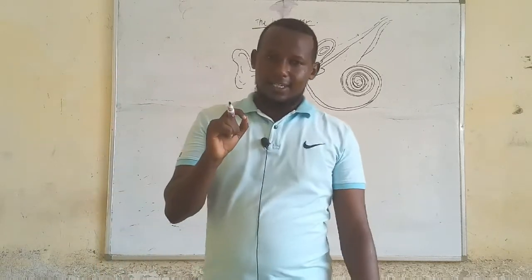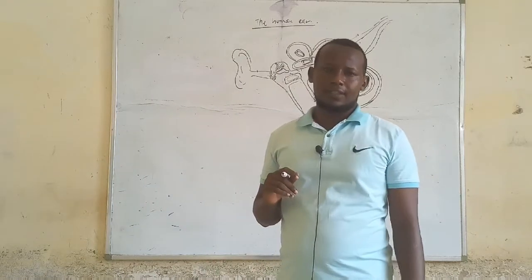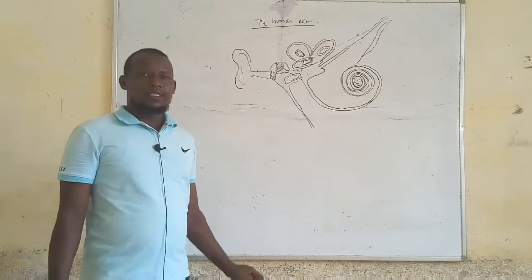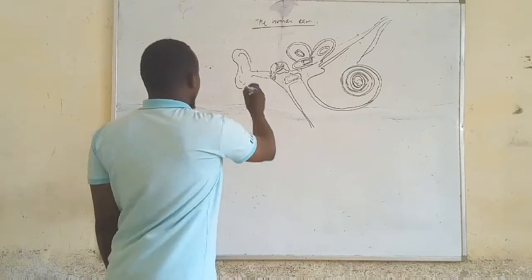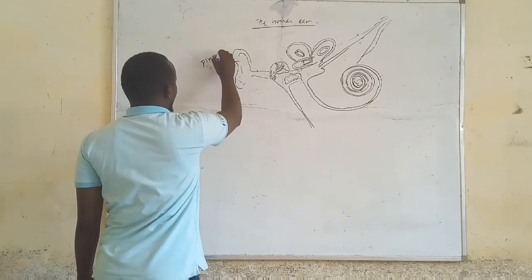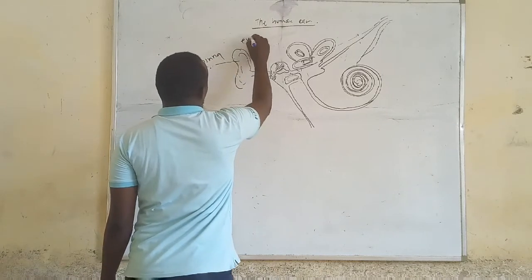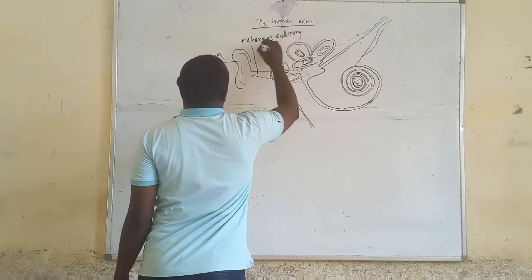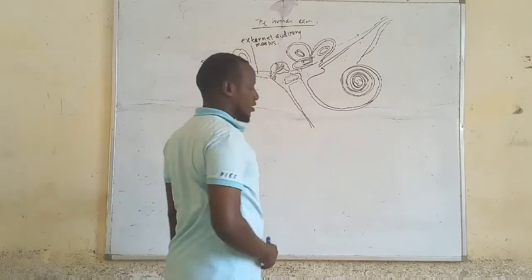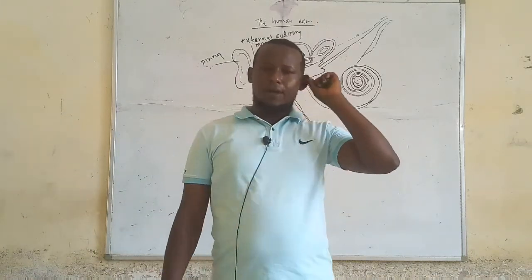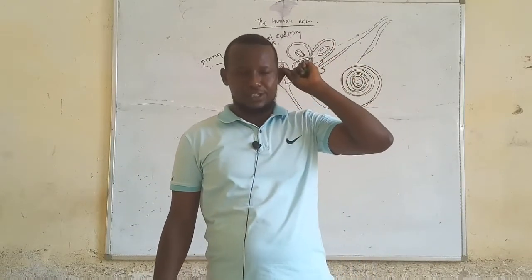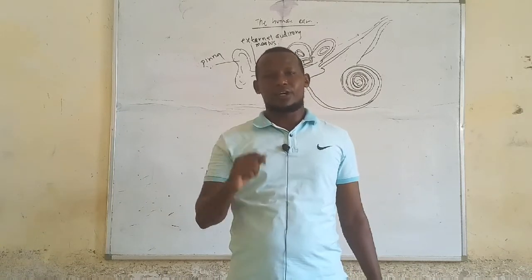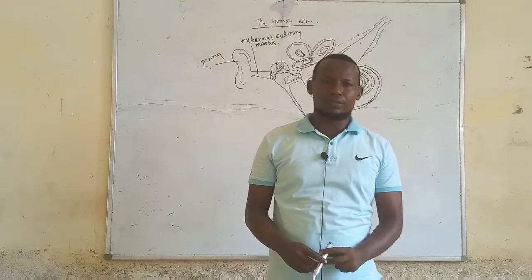The ear is divided into three regions: the outer region, the middle region, and the inner region. The outer ear is made up of the pinna — this is the pinna — and the external auditory meatus. The pinna is a flap of skin made of cartilage, and its main role is to collect and concentrate the sound waves into the external auditory meatus.